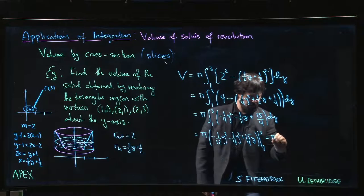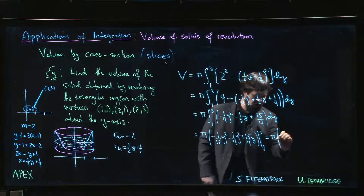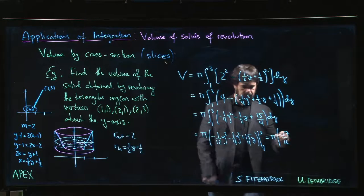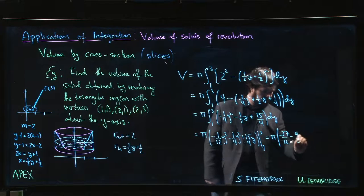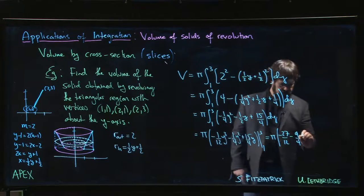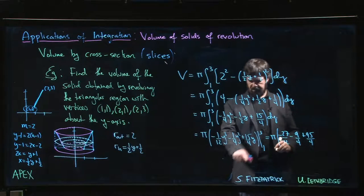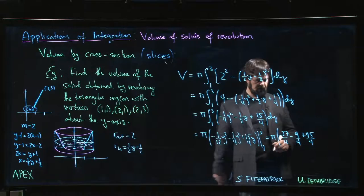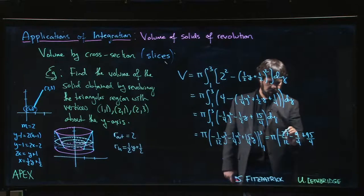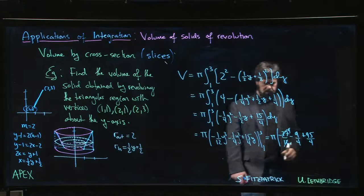Alright, so the numbers aren't nice but they're doable. Let's do the upper limit first. We get minus 27/12 for that first one, minus 9/4, plus 45/4 coming from here. 3 times 15. This is also, by the way, 9/4 if we reduce.